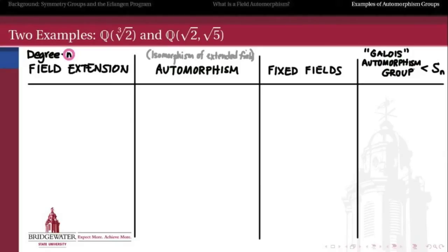Because the previous extension was just degree 2, there's not a whole lot that's interesting. But the story gets considerably more complicated once we have several roots to work with. We want to look at the cube root of 2 extended over the rationals, as well as the composite extension by the square root of 2 and the square root of 5. For each, we want to list all automorphisms over the base, determine the fixed fields of each, and determine what group the automorphism group — the Galois group — is isomorphic to. We can always begin knowing that automorphism group will be isomorphic to a subgroup of Sn, where n is the degree of the extension.